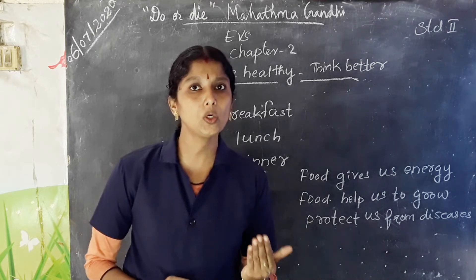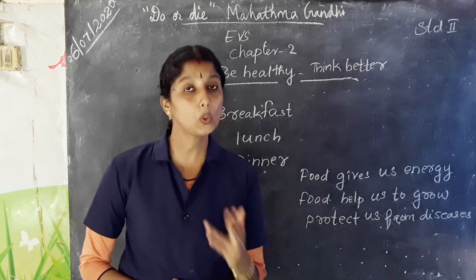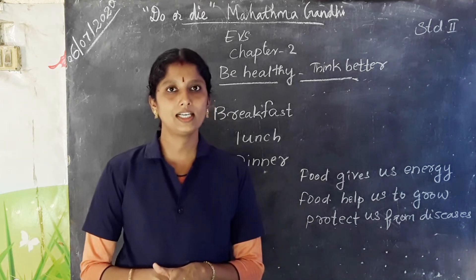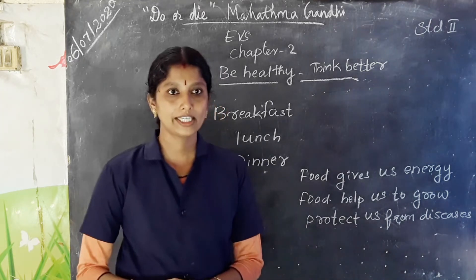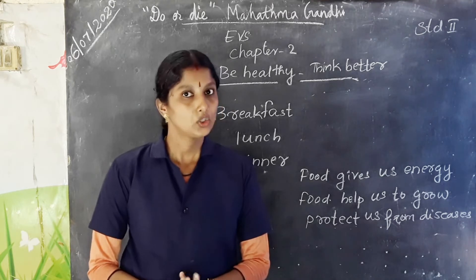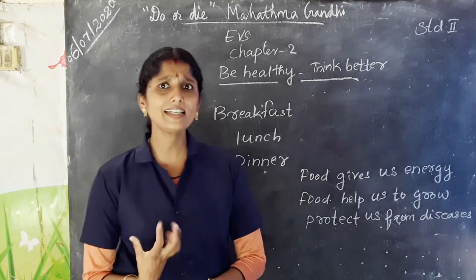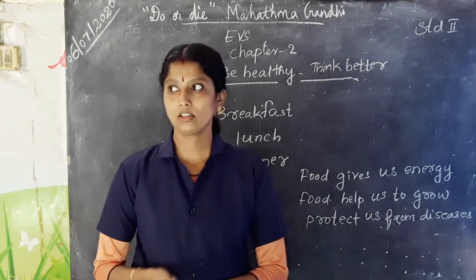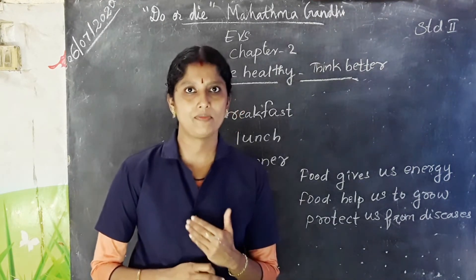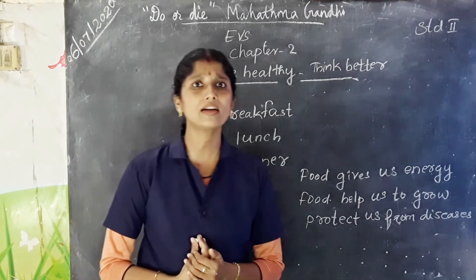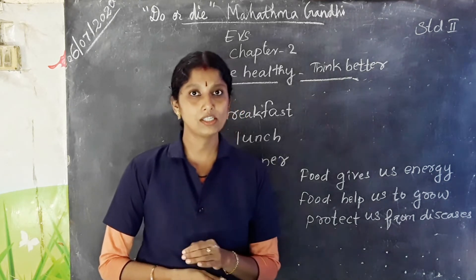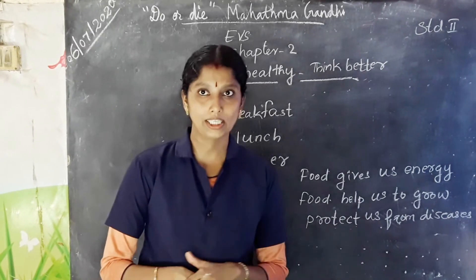Which food do we cook and eat? Can you say some examples of cooked food? Rice, dosa, fish curry, meat, etc. — we eat after cooking. Next, uncooked food. Can you say some examples of uncooked food? Fruits and vegetables. Most fruits we eat without cooking.